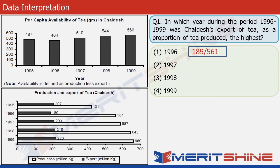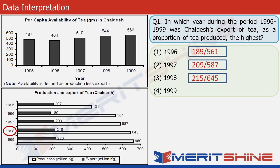For 1997, production is 587 and export is 209. For 1998, production is 645 and export is 215. For 1999, production is 660 and export is 220. Now we have four ratios. We'll use a trick: instead of finding the highest of these proper fractions, we reverse them — turning them into improper fractions — and find the lowest, which gives the same answer and makes calculations easier.